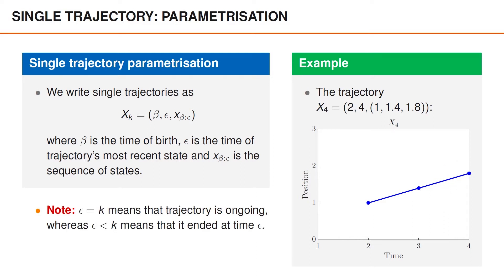The subindex K in capital X_K means that we only describe the trajectory in the interval from time 1 to time k. If epsilon is equal to k, this means that the trajectory is still ongoing. For instance, it is possible that the trajectory in the figure to the right doesn't end at time 4, and epsilon may take a larger value in capital X_5. On the other hand, if epsilon is less than k, we know that the trajectory ends at time epsilon.